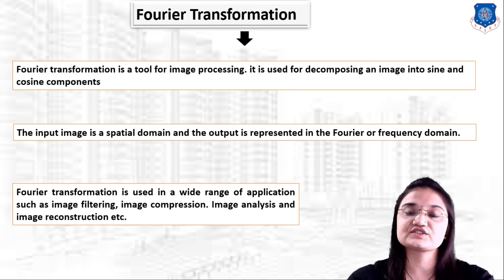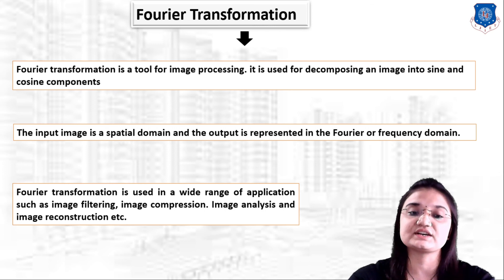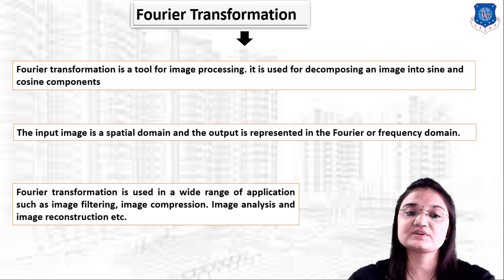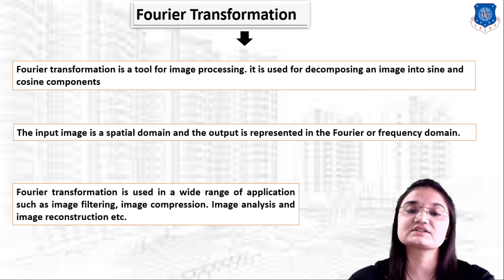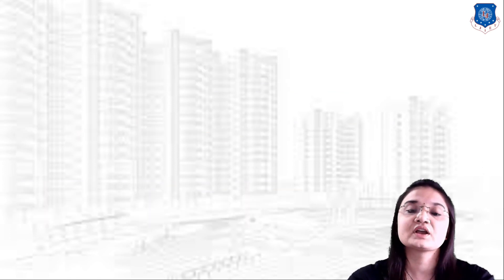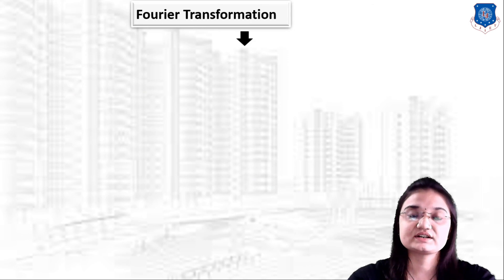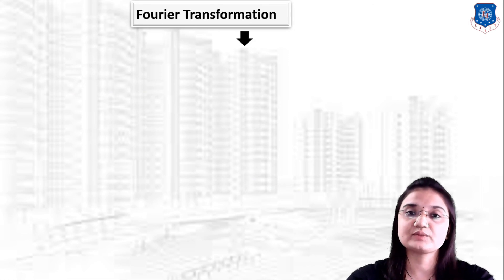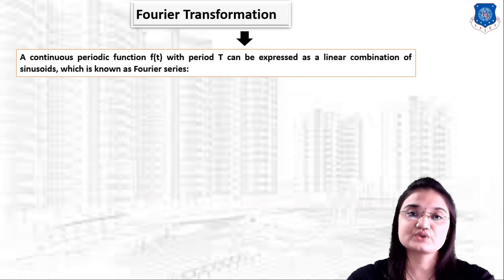Fourier transformation is used in a wide range of applications such as image filtering, image compression, image analysis, and image reconstruction. Now let us understand how we can convert a time domain function to the frequency domain.